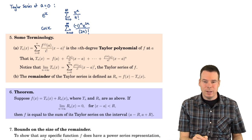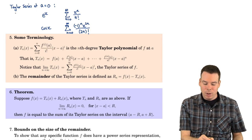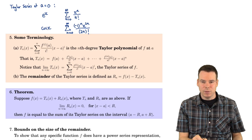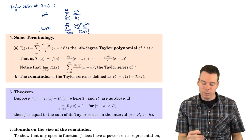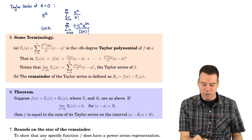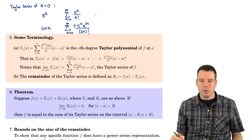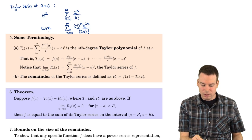Just a quick summary of what we did in the last example. We worked out the Taylor series centered at zero for the exponential function and the cosine function — this is what we call the Maclaurin series. We found that the exponential function's Taylor series at zero is given by the sum of x to the n over n factorial, summing over n from zero to infinity, and the corresponding cosine series is here as well.